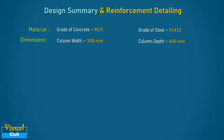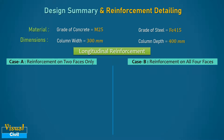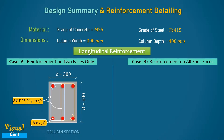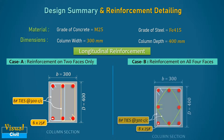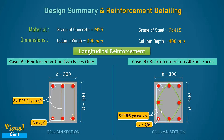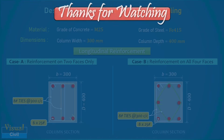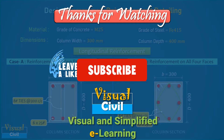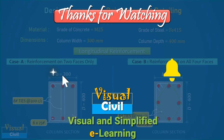In summary, for the column of 300 mm × 400 mm under combined axial load and uniaxial moment: Case A (reinforcement on two faces) — provide 6 bars of 25 mm diameter; Case B (reinforcement on all four faces) — provide 8 bars of 25 mm diameter. In both cases, provide 8 mm dia lateral ties at 300 mm center-to-center.